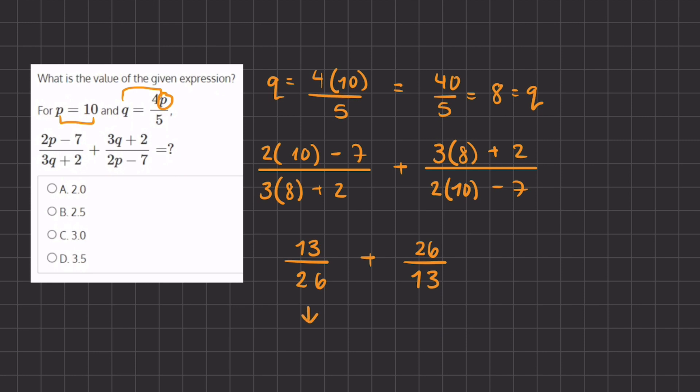13 divided by 26 gives us half, because we can divide the top and bottom by 13. And 26 divided by 13 gives us 2. All right, so we're going to add this half to 2, because 13 goes into 26, 2 times. All right, so now when we simplify this, we have half plus 2, which gives us 2 and a half, or in decimal form, 2.5. So 2.5 is going to be the value of the expression given, which is answer B.